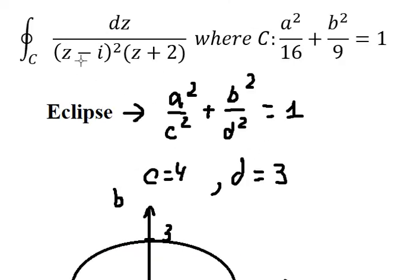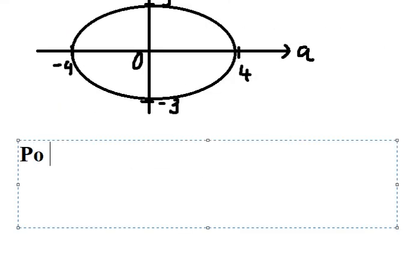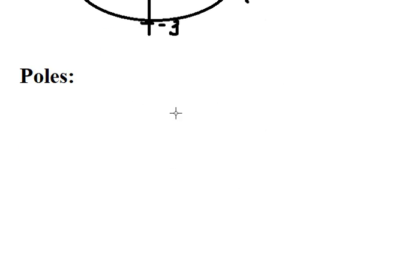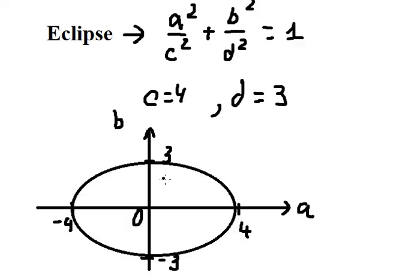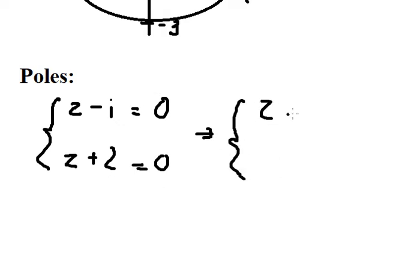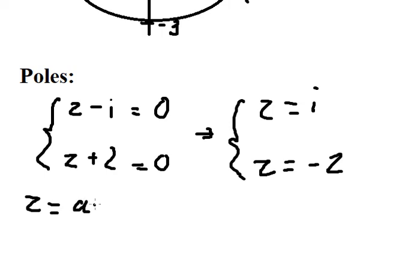Now we need to find the poles. We need to concentrate on the denominator. I go to the right — number two goes to the right. We know that z equals a plus bi.